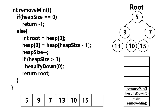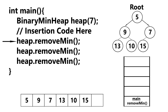We return to the remove min method, which now returns the data from our root node. It has finished executing, so we pop it off the stack, and our main function is notified that remove min has finished, so we pop that off the stack and continue executing the rest of the code.